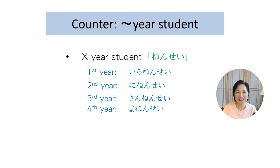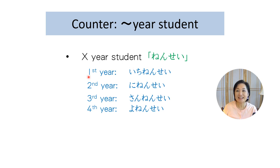Let's go back to our sentence structure. I want you to learn a counter that shows which grade you are in school. The counter for school year is nensei. If you're a freshman, you say ichi-nen-sei. Sophomore — second-year student — is ni-nen-sei. Third year is san-nen-sei. And if you're a senior or fourth-year student, you say yo-nen-sei.